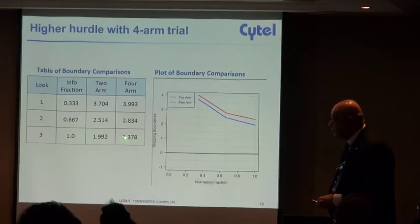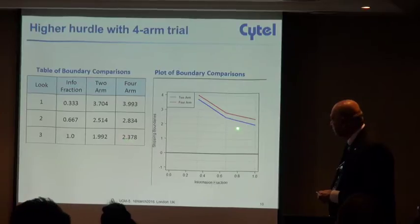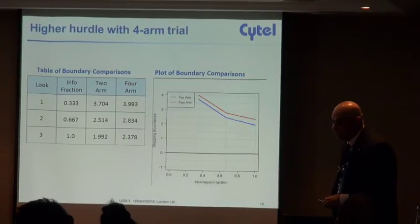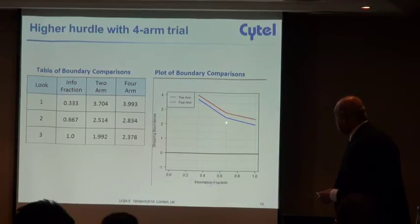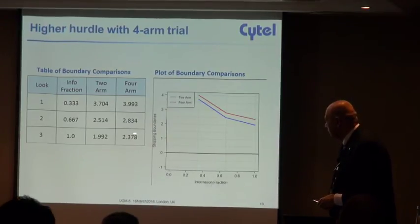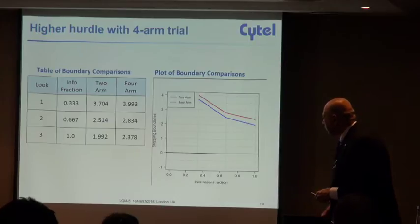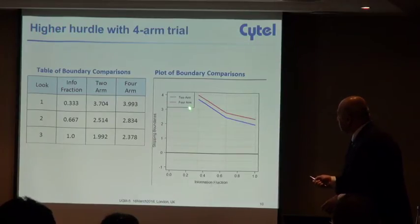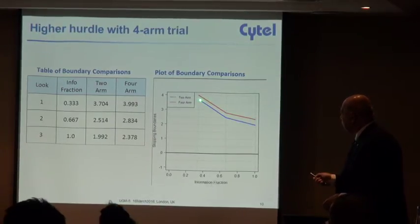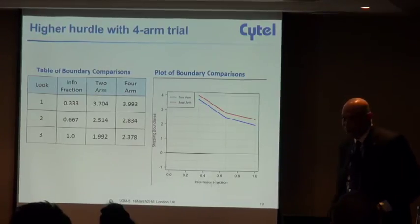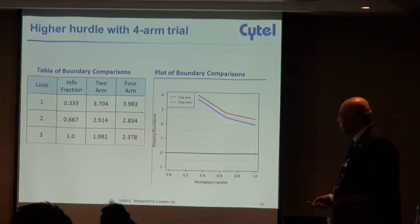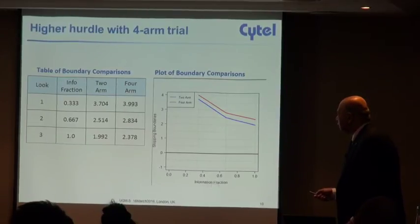You've spent some alpha along the way but it's very close to 1.96. Not so with the four arm trial. Now the final criterion is much stricter: it's almost 2.4 in order to preserve the type one error. That's why there's a sort of trade-off. On the one hand, this red boundary, which is for four arms, is much higher than the blue boundary, which is for two arms. But on the other hand, you've got three chances to cross the red boundary because there are three different comparisons.